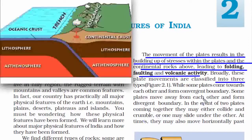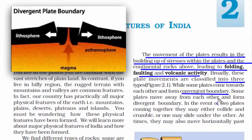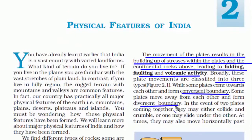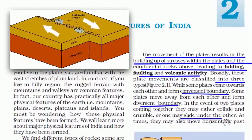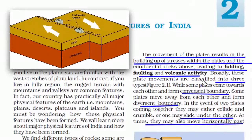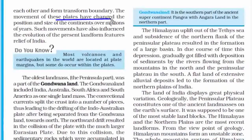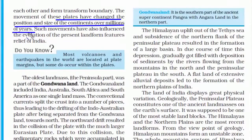Plate movements are classified into three types. Some plates come towards each other and form a convergent boundary, while some plates move away from each other and form a divergent boundary. When two plates come together they may collide, crumble, or one may slide under the other. At times they may also move horizontally past each other. The movement of these plates has changed the position and size of the continents over millions of years.